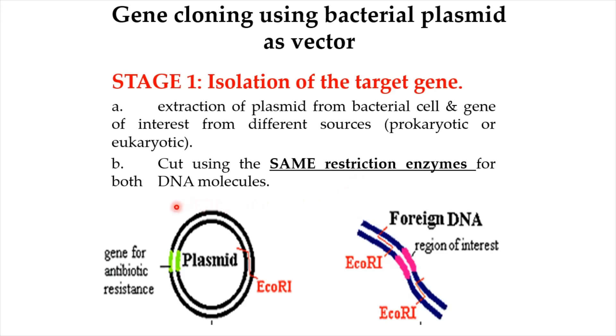As shown in the diagram, the same restriction enzyme called EcoRI is used to cut the plasmid and also the foreign DNA into several fragments.